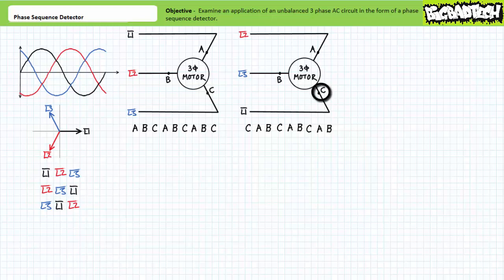As L1 voltage peaks it establishes a magnetic pole at terminal C. Then as L2 voltage peaks it establishes a magnetic pole at terminal A. Then as L3 voltage peaks it establishes a magnetic pole at terminal B. The process repeats itself, CAB, CAB, again establishing counterclockwise rotation.